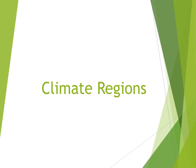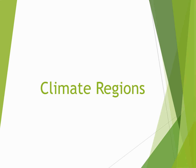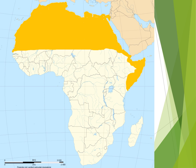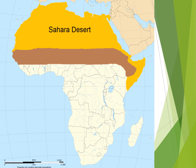Climate regions. In the north, we have the Sahara Desert. South of the Sahara Desert is a thin strip of land that is partially desert, partially grassland, called the Sahel.